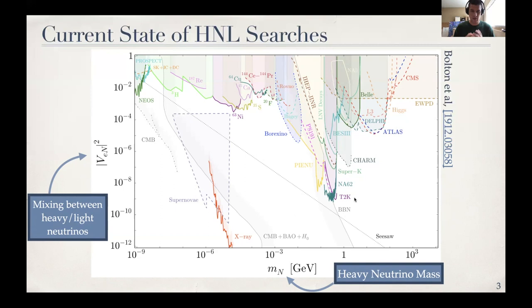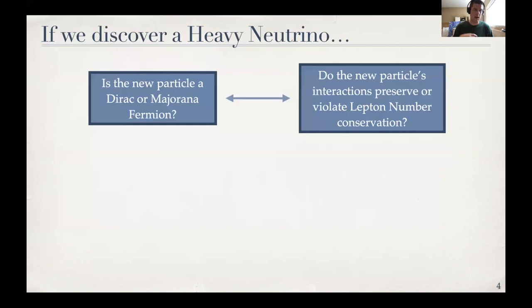So if we happen to be lucky enough to discover one of these heavy neutral leptons, there are going to be a large number of questions asked. What are its properties? Does it mix with all three neutrino flavors? Are there more than one of these heavy neutral leptons, et cetera. But the most compelling and exciting question to me, which is intimately related to the lightness of the standard model neutrinos, is whether or not this new heavy neutrino is a Dirac or a Majorana fermion, how it generates this mass term. An equivalent question that one can ask is whether or not this new particle's interactions conserve or violate lepton number. If lepton number is a good symmetry of nature, then these are Dirac fermions. If it's not, they're Majorana fermions.